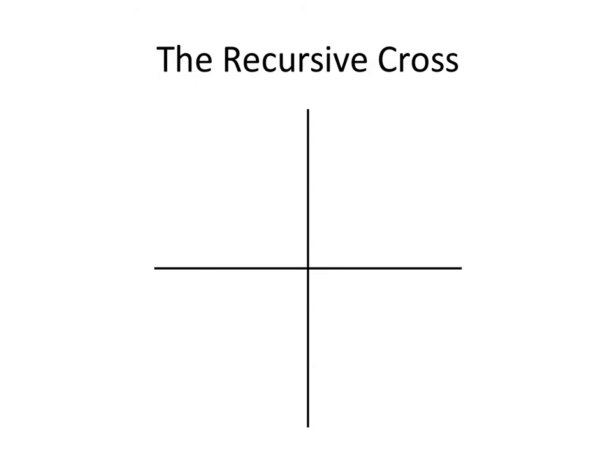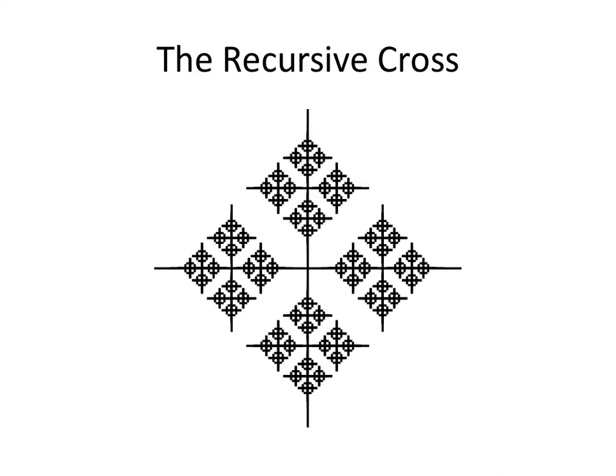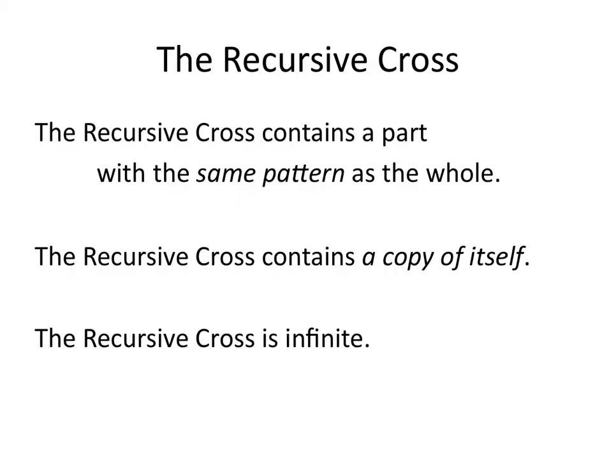Let's do a recursive cross. To have the cross done in a finite period of time, you have to accelerate — do every next crossing action twice as fast. We start with a cross, cross each of the arms of the cross, cross the arms again, cross all the arms, and do it again. If you do this infinitely many times by accelerating, always twice as fast, in the end you will have an infinitely detailed cross — a kind of fractal cross. Each arm of the cross, the big quarter area, has the same structure as the whole. So the recursive cross contains a part with the same pattern as the whole, it contains a copy of itself, and so the recursive cross is infinite.